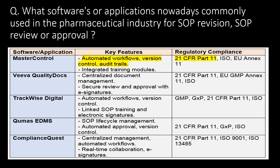What software or applications are commonly used in the pharmaceutical industry for SOP revision, review, or approval? Here is the list of the top five: 1) MasterControl, 2) Veeva Quality Docs, 3) TrackWise Digital, 4) QMAS EDMS, and 5) ComplianceQuest. All these software applications have key features like automated workflows, version control, audit trails, and regulatory compliance, majorly including 21 CFR Part 11 compliance.